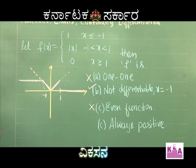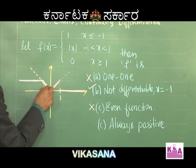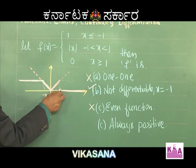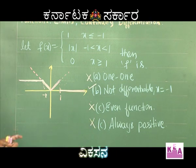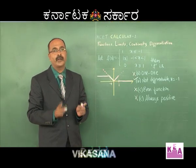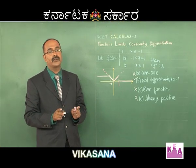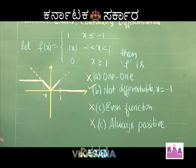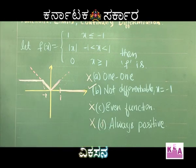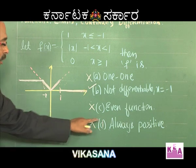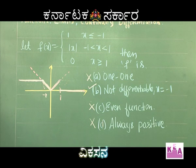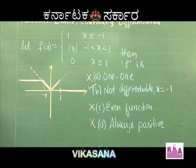Option D says always positive — it looks correct since all parts of the graph appear positive. But there is a clear difference between positive and non-negative. Positive means greater than 0; non-negative includes 0. Since the function equals 0 for x ≥ 1, it is not always positive. Therefore option D is also false. Only option B is correct.